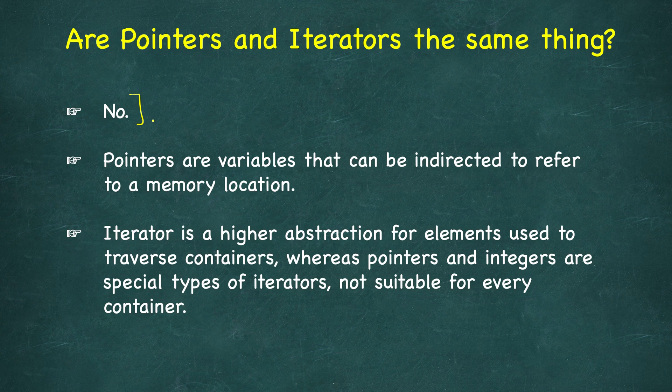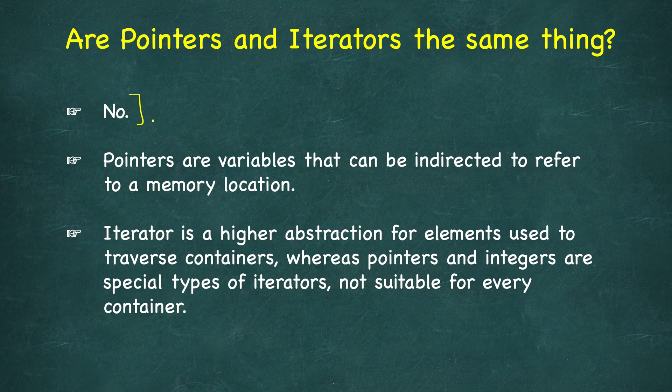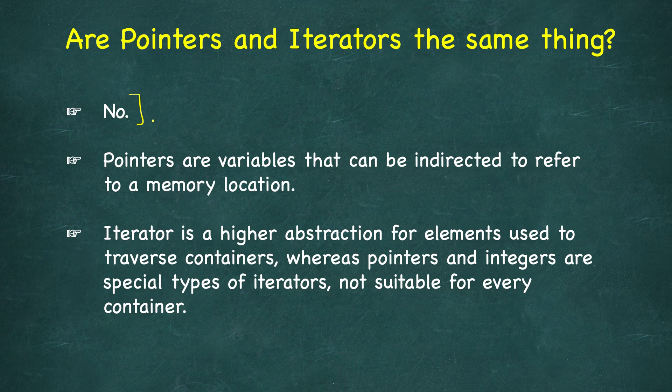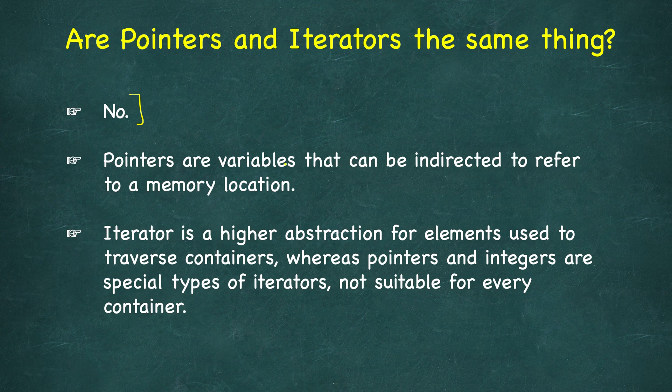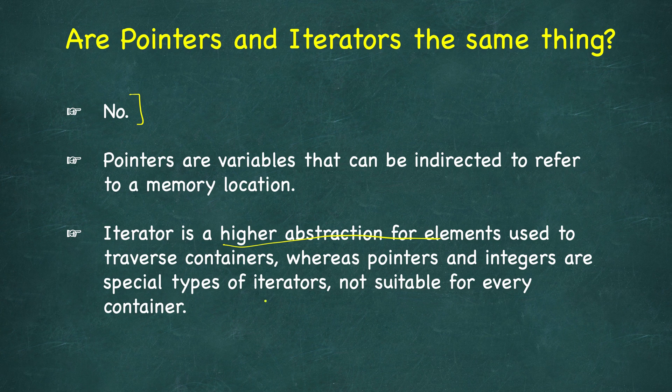The same happens with integers. When acting as indices to arrays, integers are iterators for that particular application, but they are essentially discrete numeric values. Integers also qualify as iterators of some type. In short, an iterator is a higher level abstraction of elements that can be used to traverse containers, whereas pointers and integers are special types of iterators not suitable for every container.